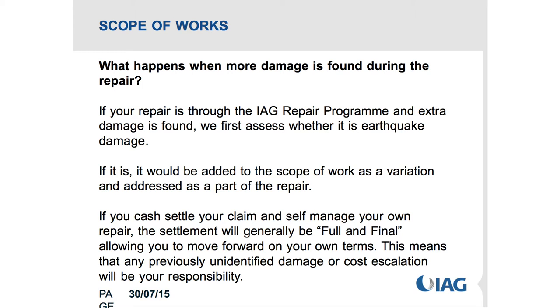If you're through a managed repair program, additional damage found is treated as a variation. However, if you choose to cash settle your claim and manage your own repair, the settlement is generally full and final. If you have selected a full and final cash settlement, then if any other damage is found, the cost escalation and any previously unidentified damage is your responsibility. You would want to be confident that the cash settlement is adequate to capture all of the damage.